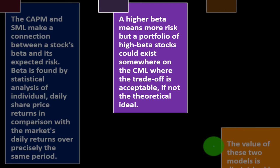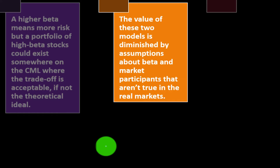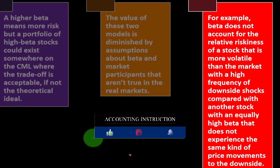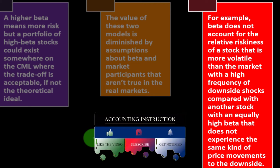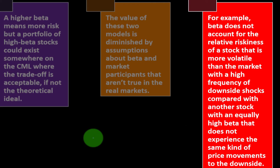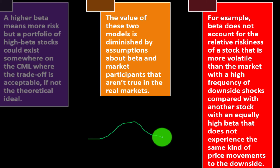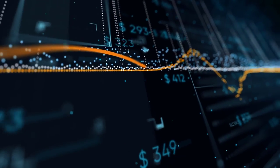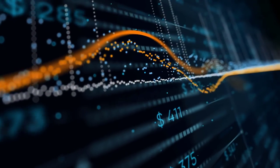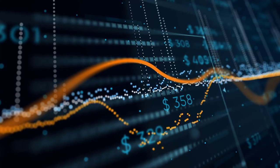A higher beta means more risk, but a portfolio of high-beta stocks could exist somewhere on the CML where the trade-off is acceptable, if not the theoretical ideal. The value of these two models is diminished by assumptions about beta and market participants that aren't true in real markets. For example, beta does not account for the relative riskiness of a stock that is more volatile than the market with a high frequency of downside shocks compared with another stock with an equally high beta that doesn't experience the same downside price movements. This essentially reflects the bell-shaped distribution assumption — volatility calculations assume bell-shaped data, but that assumption could be skewed.